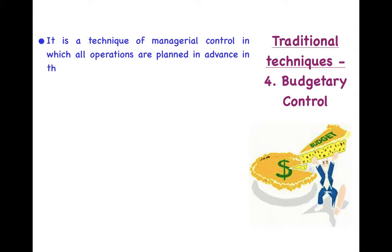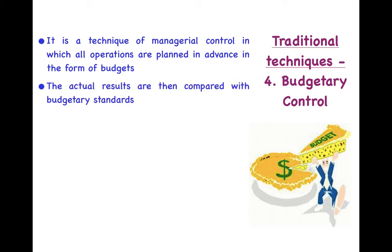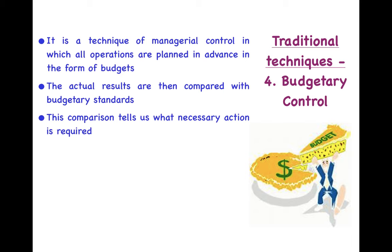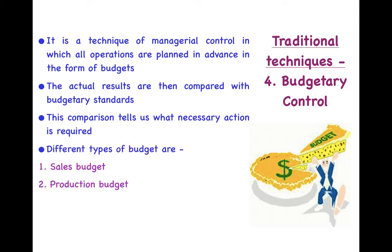The next traditional technique is budgetary control. It is a technique in which all operations are planned in advance in the form of budgets. We set budgets for all activities, then actual results are compared with the budgetary standards. This comparison tells us what corrective action is required. Different types of budgets that can be formed include sales budget, production budget, cash budget, and research and development budget.